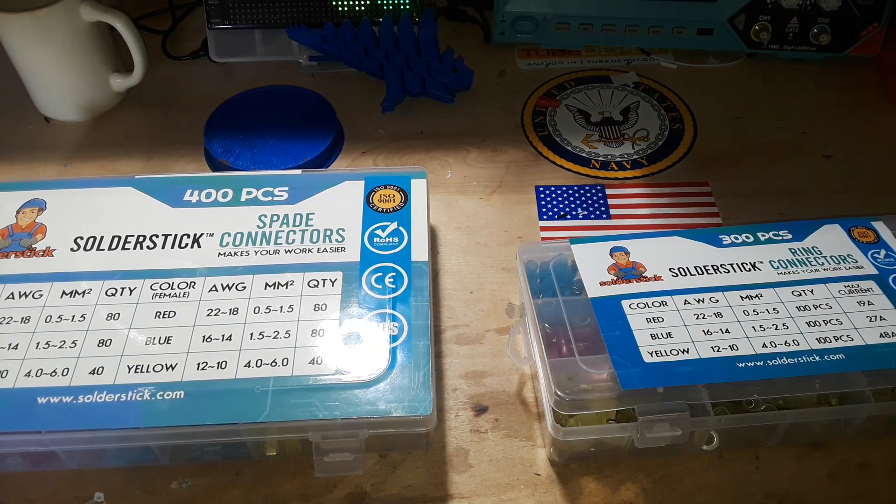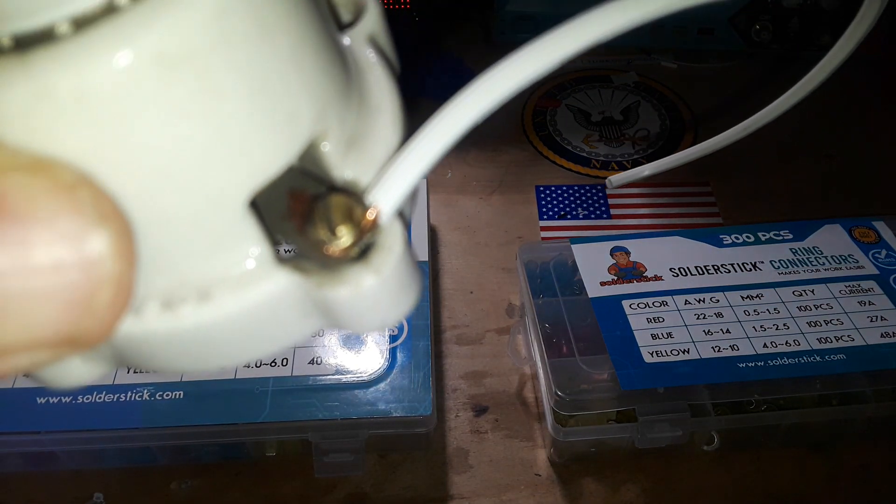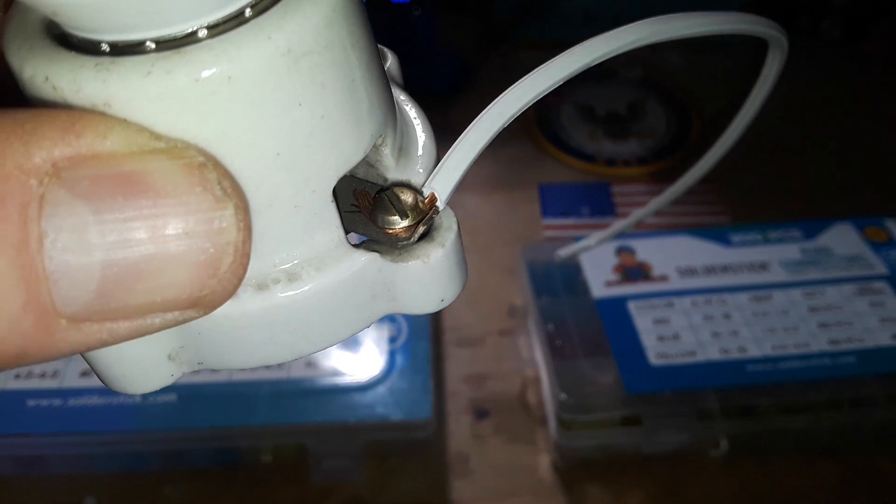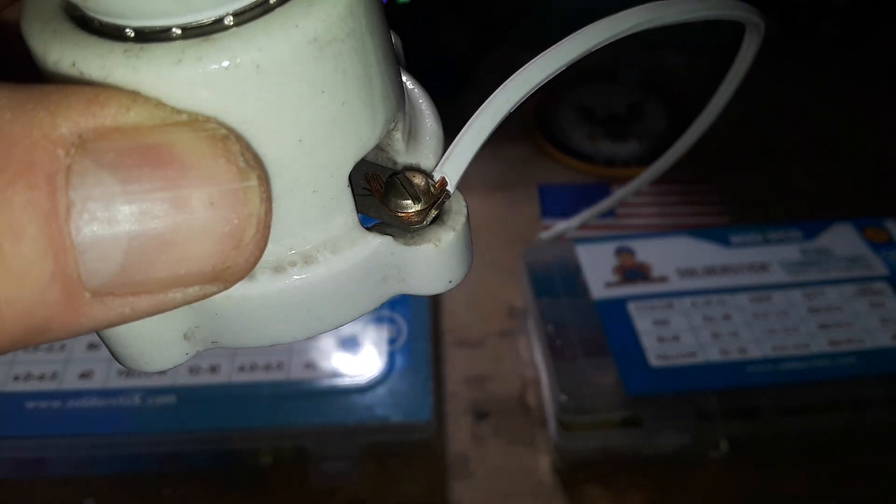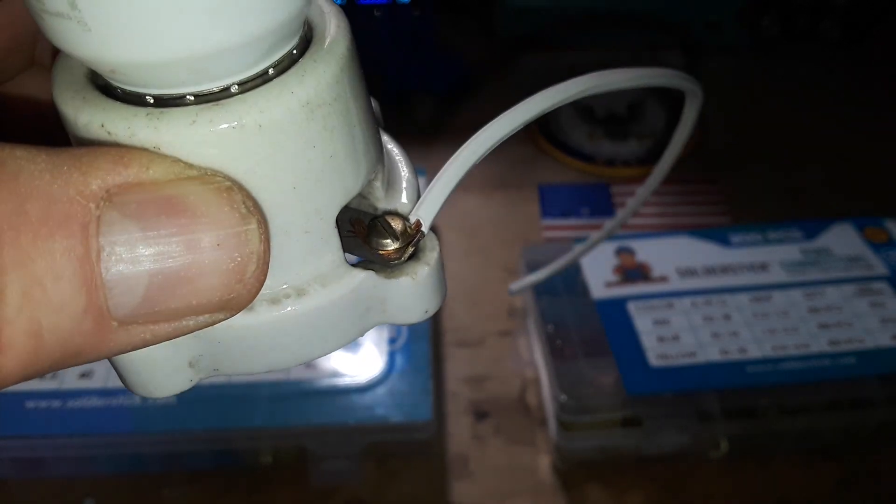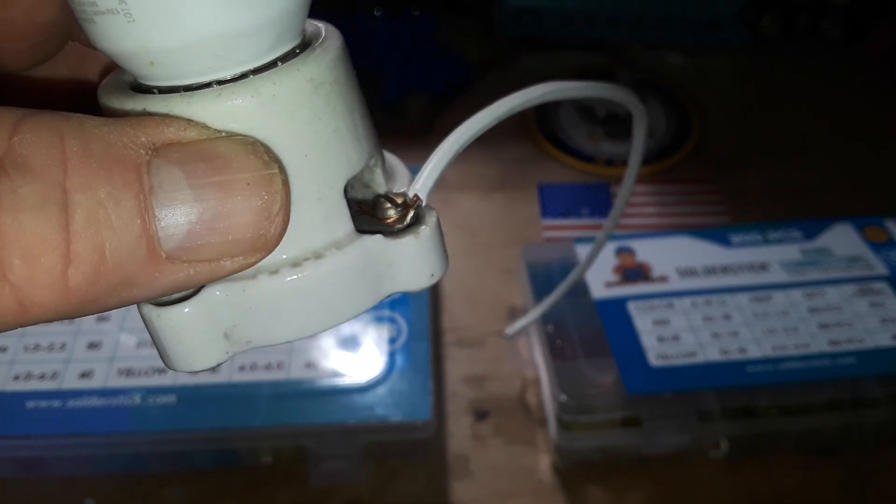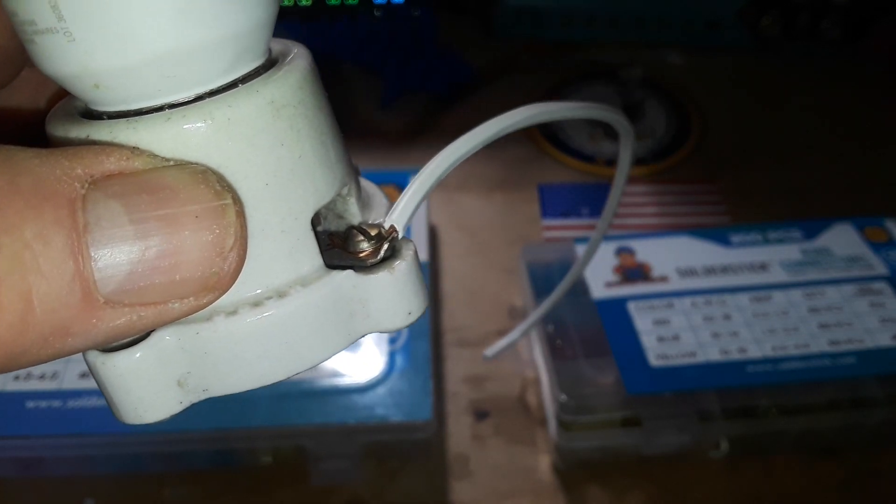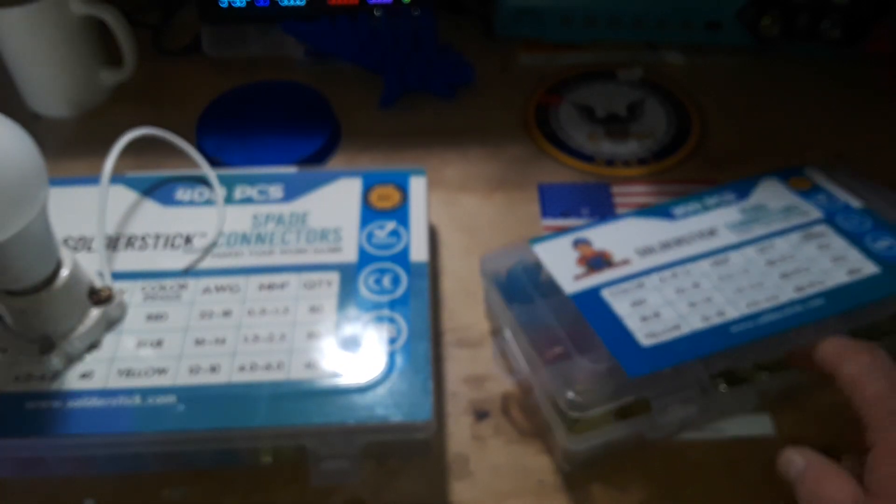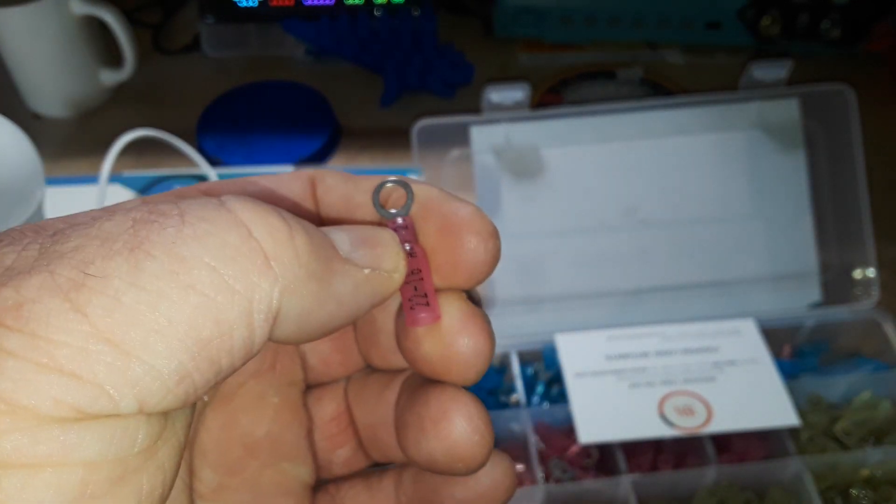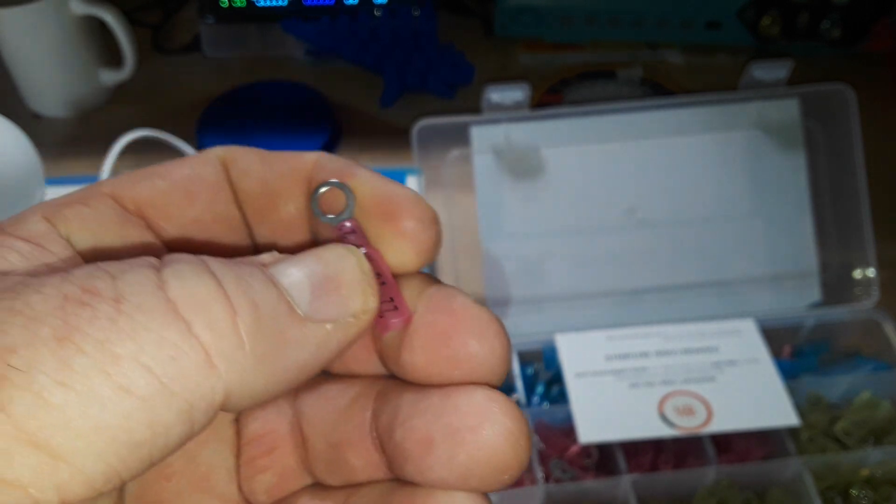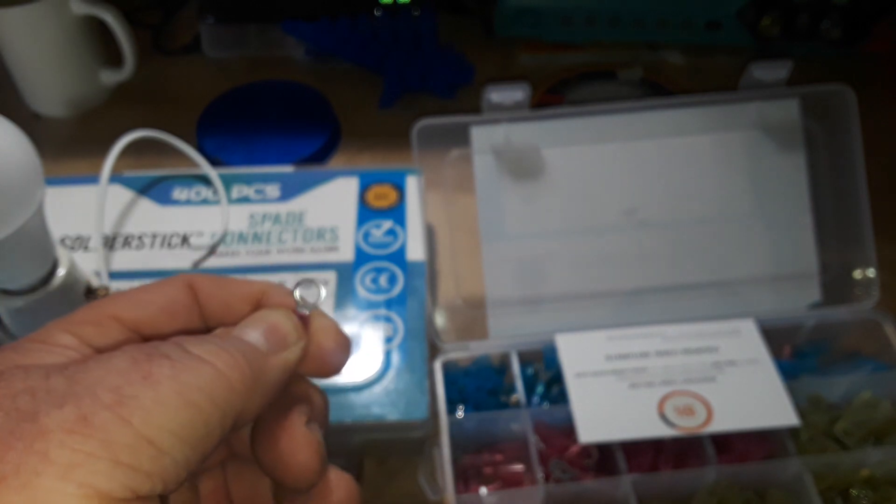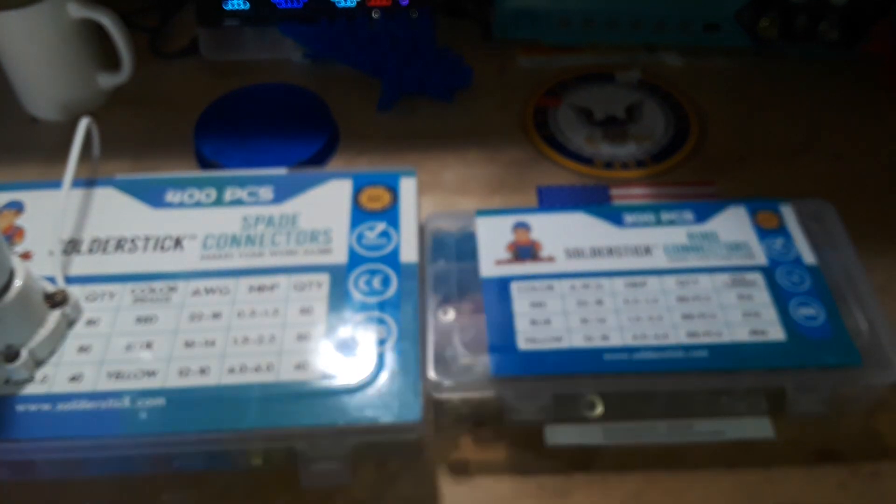And have you ever come across something like this where the wires have been stripped and just crushed underneath the screw to hold them in place? Well, time and temperature will cause those wires to move and flex and eventually come loose, which can definitely lead to a hazard. In that case, something like the solder stick ring connectors are just what the doctor ordered. Crimp these guys on your wire. They have them for all different sized wires. Heat them up. This heat shrink will shrink down, giving you a nice insulated connection to your wire that you can then put underneath that screw and have a nice professional looking solution.